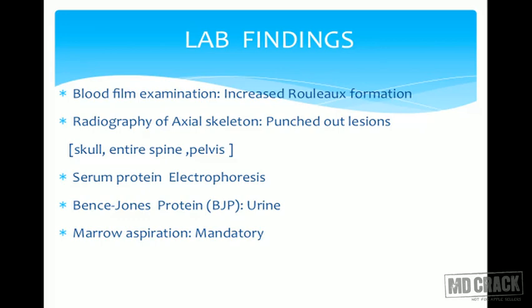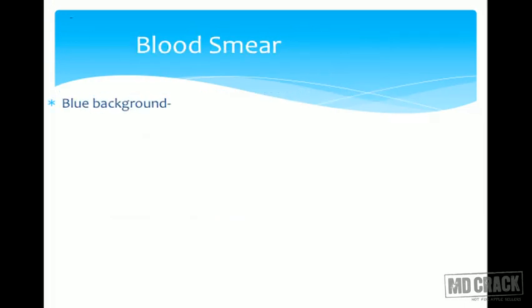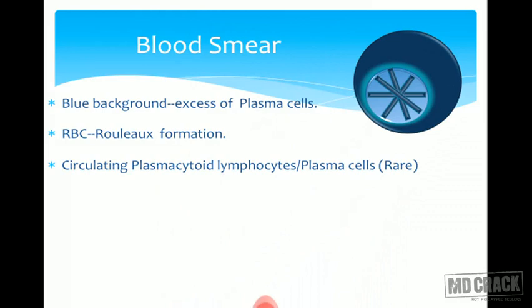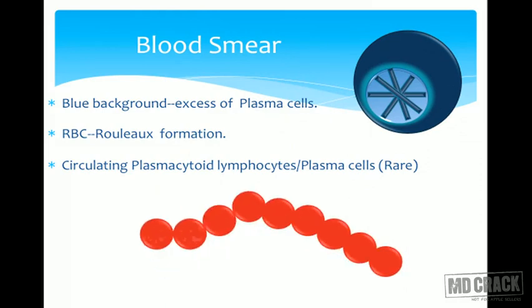The mandatory investigation is bone marrow examination - without bone marrow aspiration and detailed study, you cannot diagnose multiple myeloma. The blood smear will appear more blue due to excessive immunoglobulins. Sometimes plasma cells come into the circulation; if plenty enter the circulation, we call it plasma cell leukemia, which is very rare but can happen. Rouleaux formation refers to RBCs aligning in a linear row, caused by excessive immunoglobulin making RBCs adhere to each other.